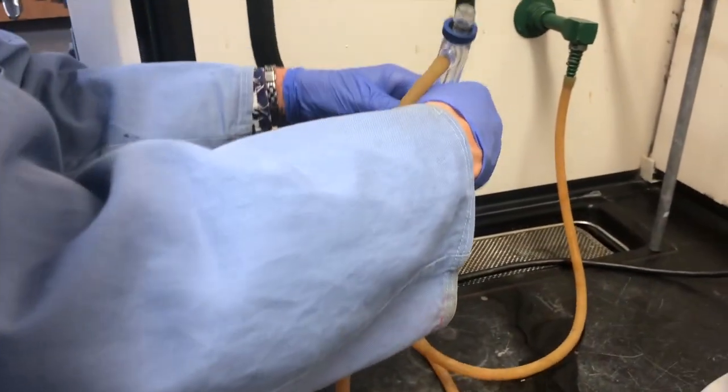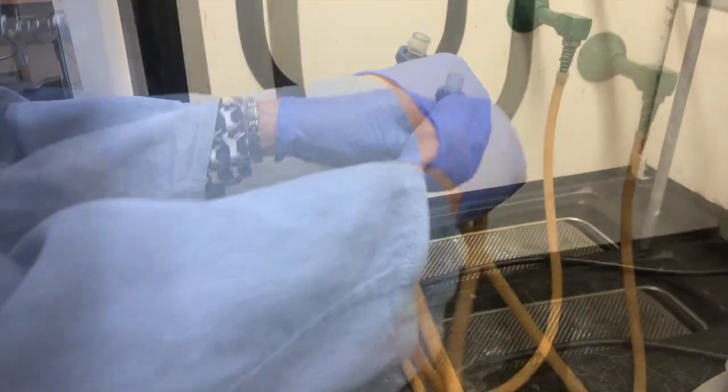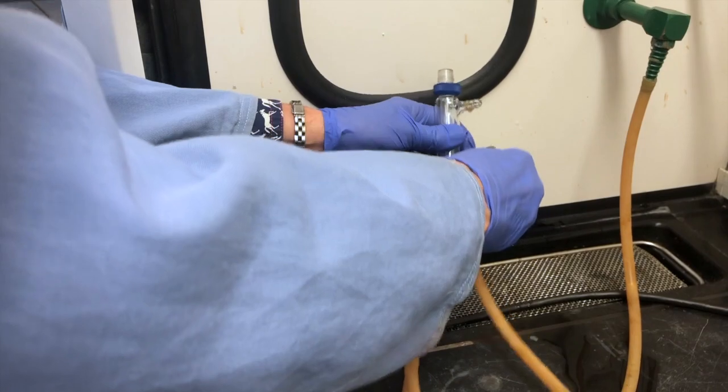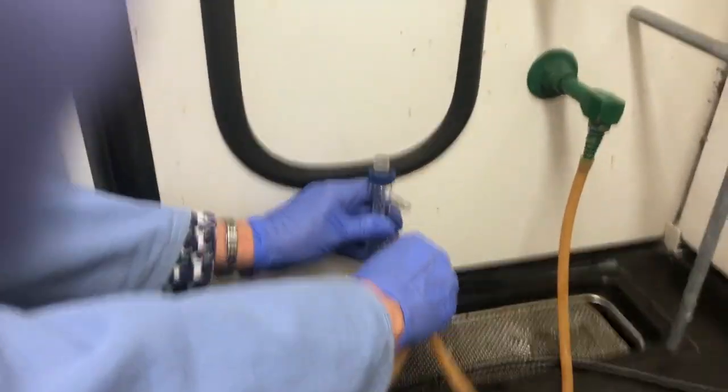Then we begin to remove the tubes from the condenser and if you're clever you can remove them over a sink and not get anything wet. Use gravity to try and figure out which one to remove first.